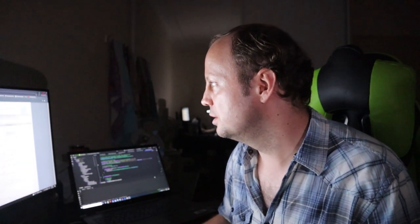Another constitutional lawyer says: 'I think it's fatally flawed because what it does is retain the full range of review of executive action. This means the Voice can comment on everything from submarines to parking tickets. We will have regular judicial interventions.' This is what I was mentioning before — Aboriginals are just Australians at this stage in a lot of ways, so this committee is going to have oversight over pretty much everything. The problem is we don't know how much power this committee is going to have — whether it's just an advisory thing, or basically a whole new branch of government where you need their approval to get anything passed.